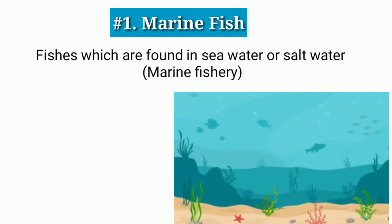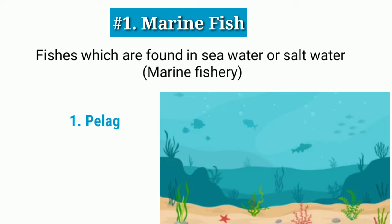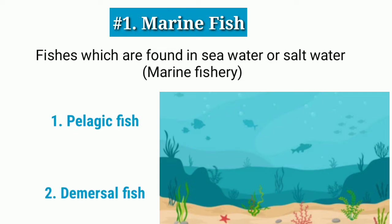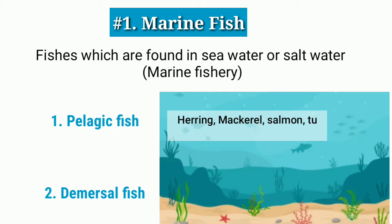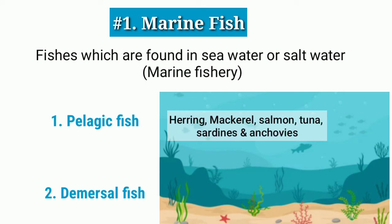Marine fisheries are generally classified into two categories. The first one is pelagic fishes. Pelagic fishes are those which are mainly found in the middle and surface layer of the sea. Examples are herring, mackerel, salmon, tuna, sardine and anchovies.